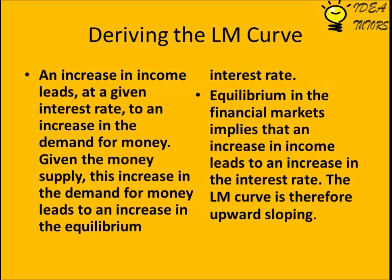To derive the LM curve: an increase in income leads to an increase in the demand for money at a given interest rate. Given the money supply, this increase in the demand for money leads to an increase in the equilibrium interest rate. Equilibrium in the financial markets implies that an increase in income leads to an increase in the interest rate, so the LM curve is therefore upward sloping.